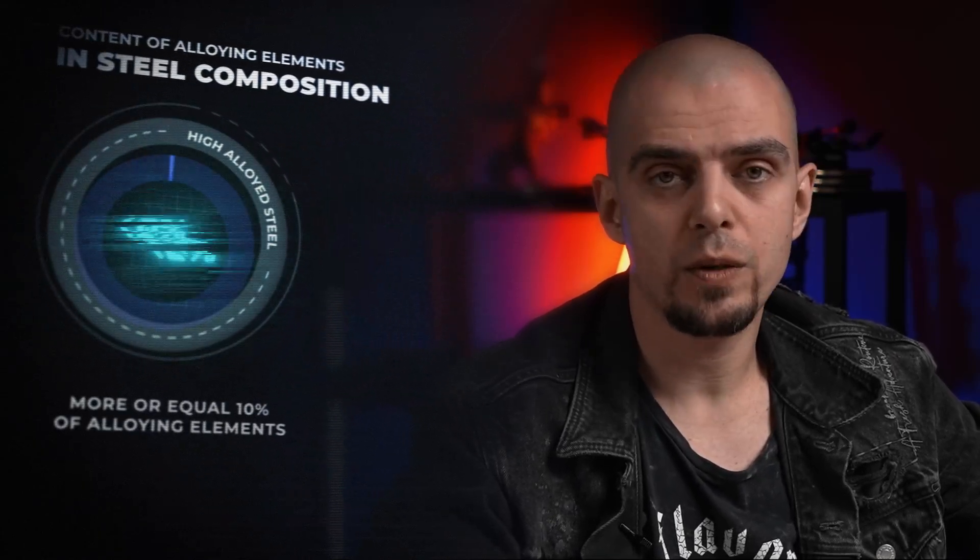Each particle of metal powder created in the process is a small microlith with tiny carbides, the size of which is around two to five microns. In comparison, traditional steel will contain carbides the size of which will start from 50 microns. In this way we obtain a workpiece with uniform distribution of carbides and a homogeneous structure — each piece of this workpiece will have the same characteristics as the rest of it.